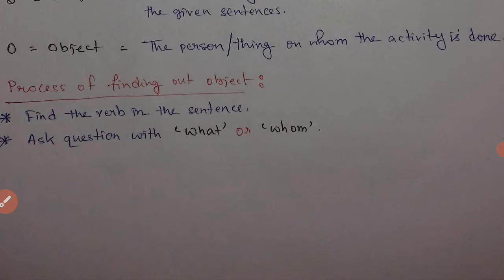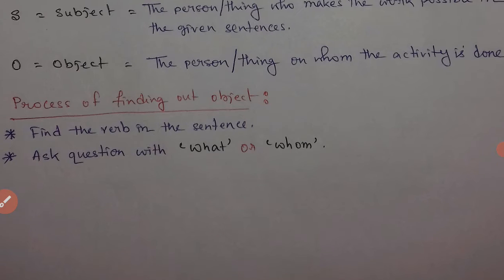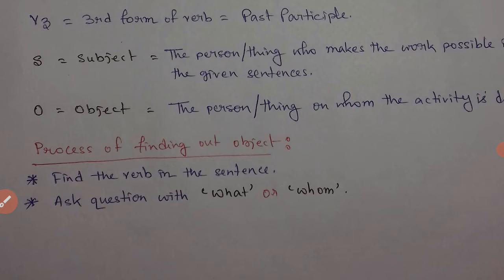Therefore, if a sentence does not contain an object, you cannot make the voice of that sentence. Now after finding out the object, you need to find out the subject, which is very easy. You have to find the doer in the sentence—the verb that is working or showing what kind of work is going on. Whoever is doing that, whether a person or thing, will be recognized as the subject.